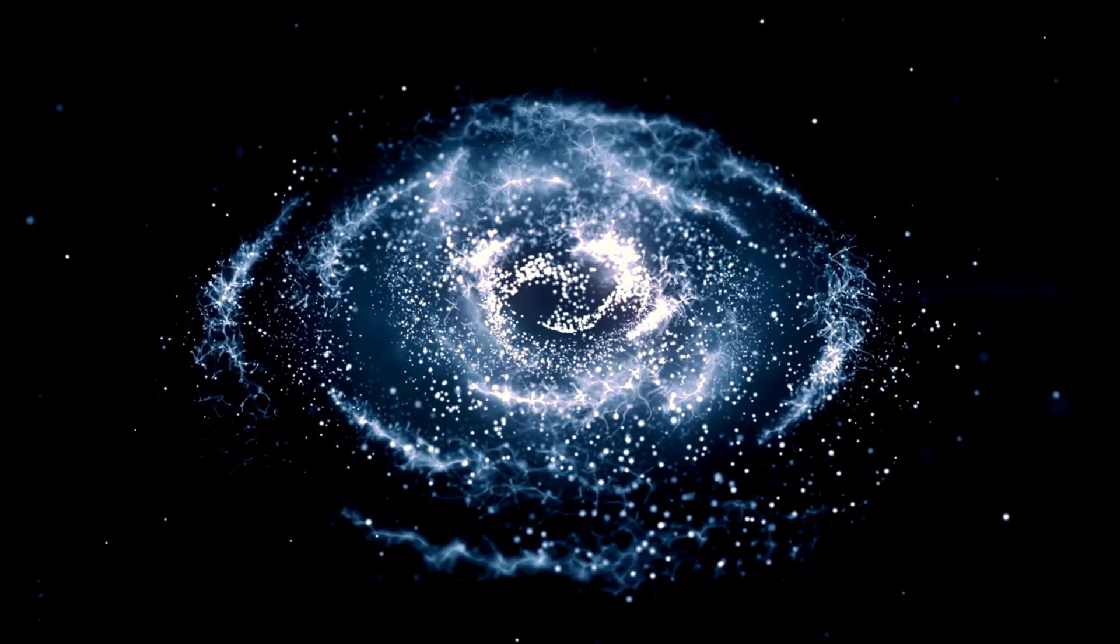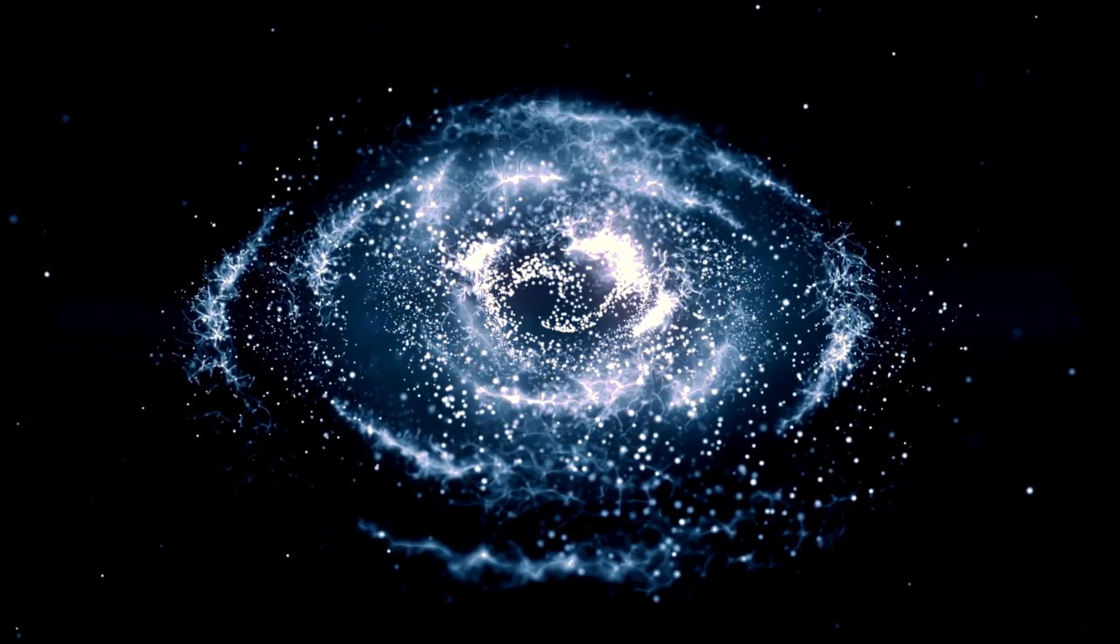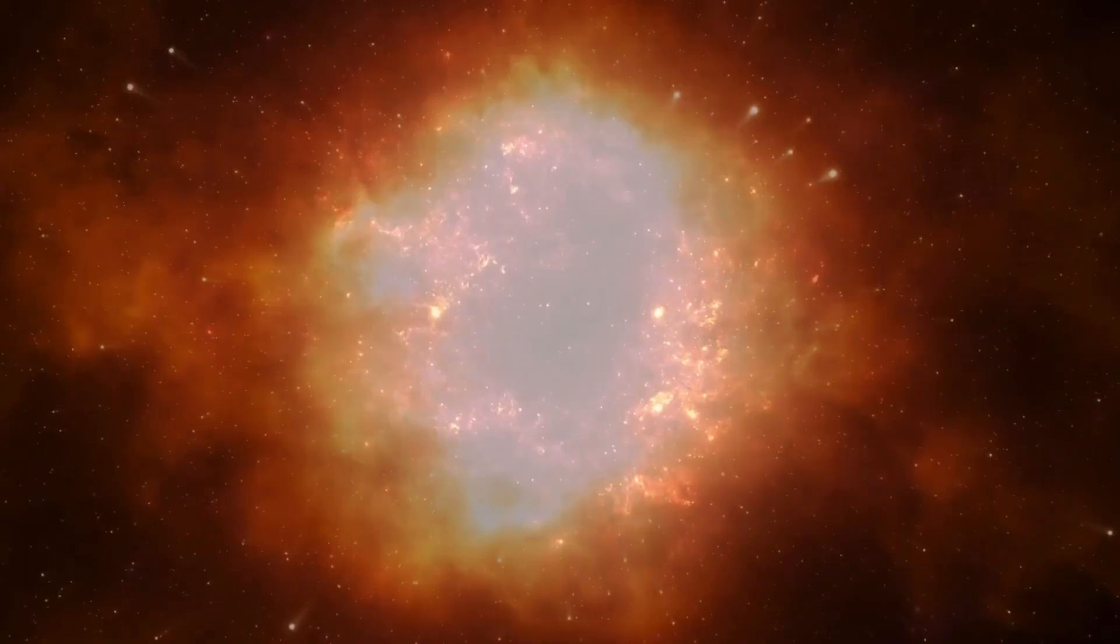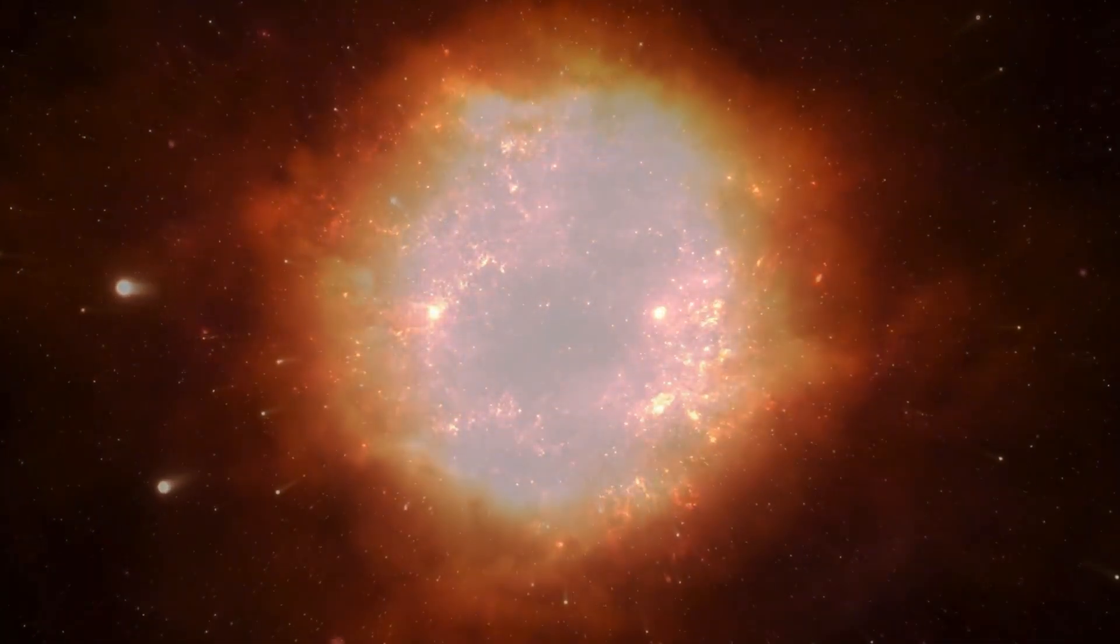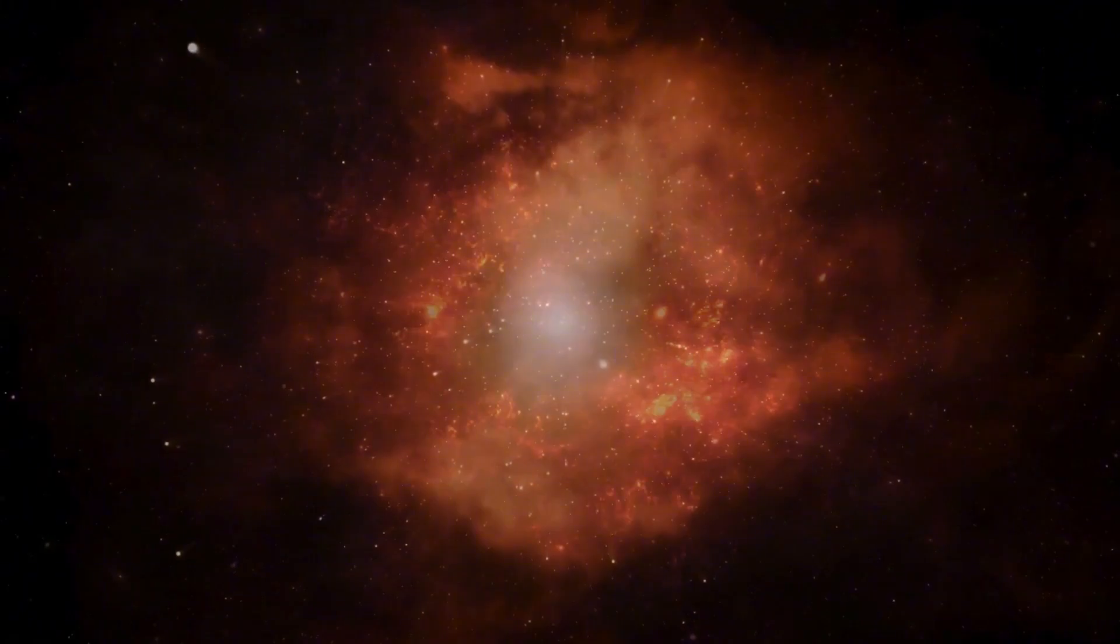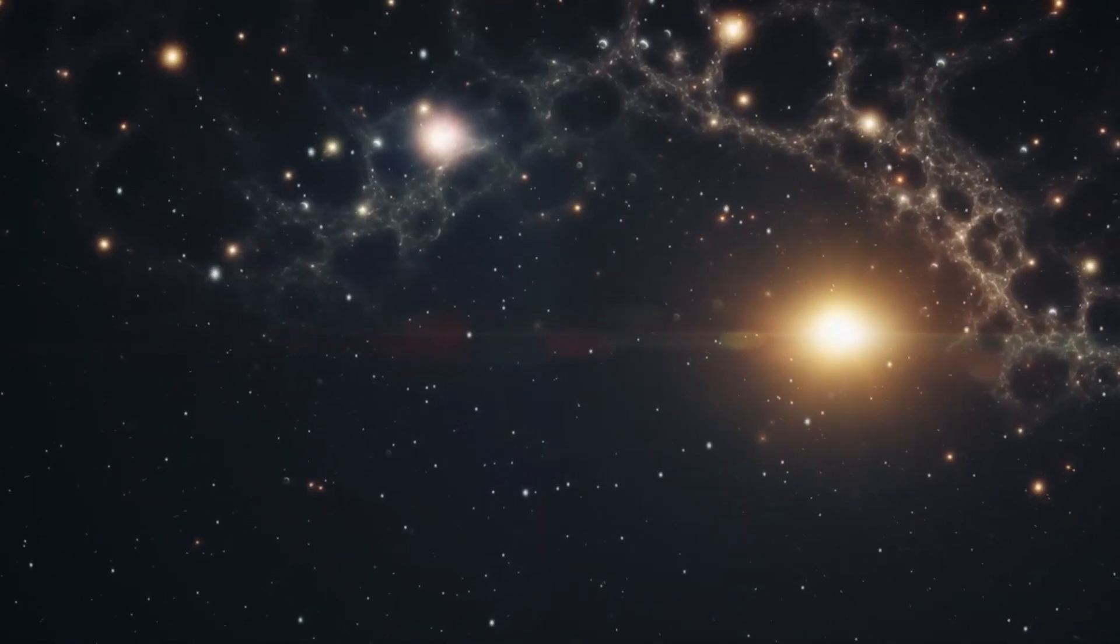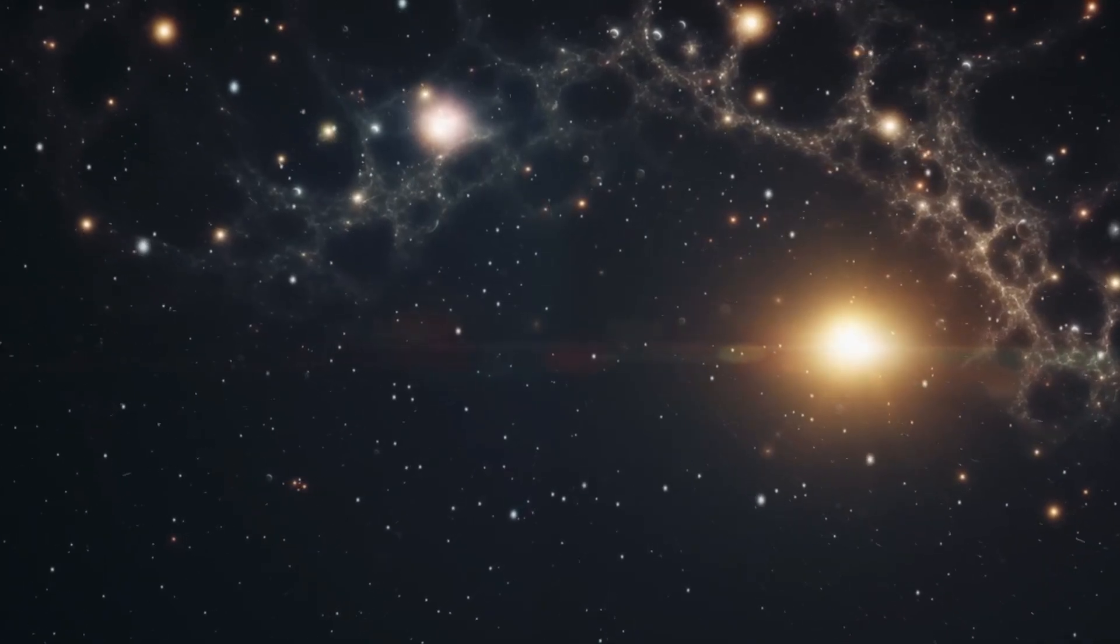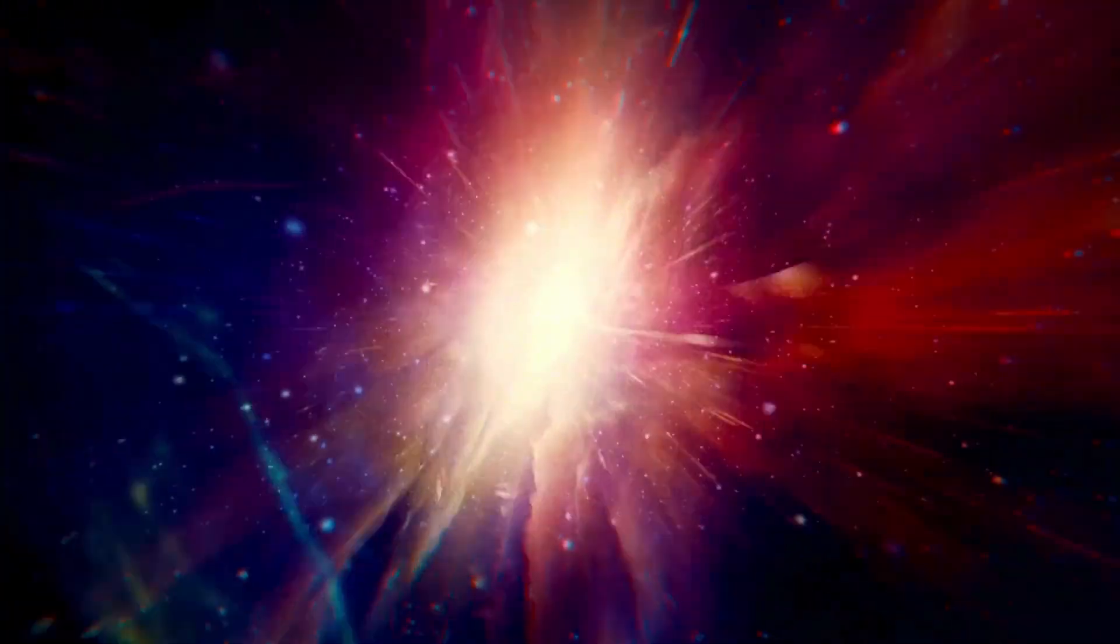However, the sun's magnetic field reversal is not an abrupt flip. Rather, it is a continuous process. As the solar cycle progresses, the sun's magnetic field goes through a series of changes. At a certain point, the magnetic field becomes so wound and tangled that it reaches a tipping point and begins to reconfigure itself, leading to the flip.